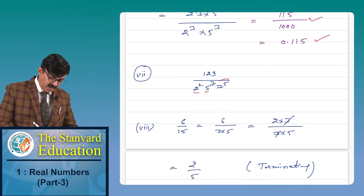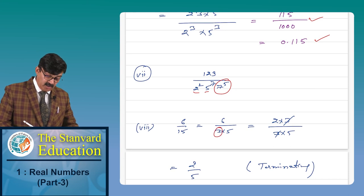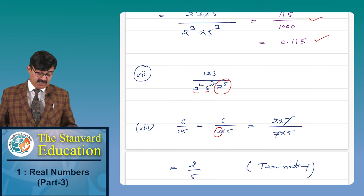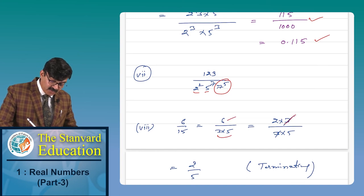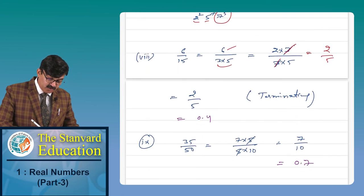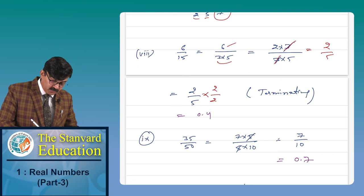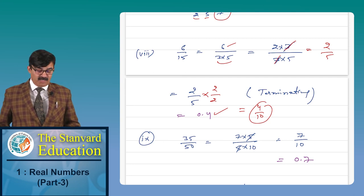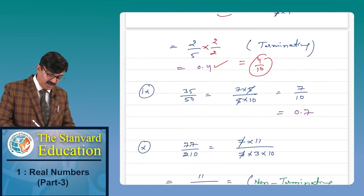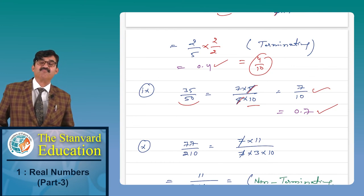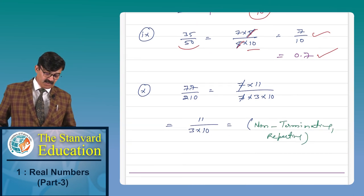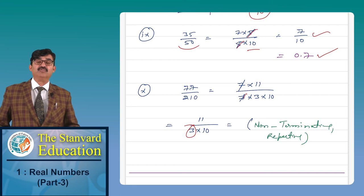Sometimes 3 appears in the denominator, but if 3 also appears in the numerator and cancels out, what remains may be only 2s and 5s — in which case it is terminating. For example, if 3 cancels from both top and bottom, leaving just 2/5, you can write it as 4/10 = 0.4. But if 3 remains in the denominator after cancellation, it is non-terminating repeating.